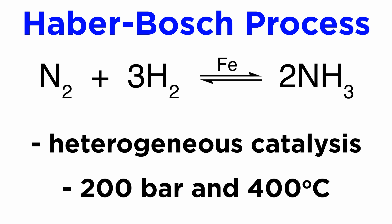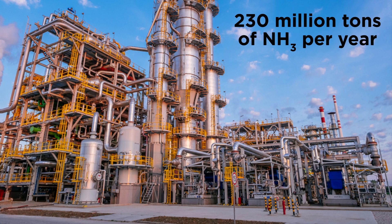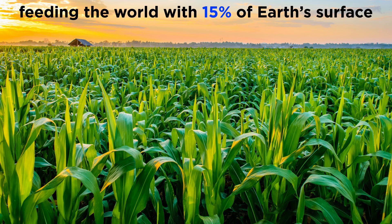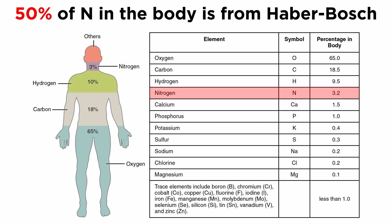To conclude, although this reaction operates under extreme temperature and pressure conditions, it is one of the most important reactions at industrial levels. Industrial ammonia production has allowed us to increase crop productivity dramatically, allowing us to feed much of the earth's population by using only 15% of the earth's surface for agriculture. It has been calculated that at least 50% of the entire nitrogen stock in our bodies comes from the Haber-Bosch process.